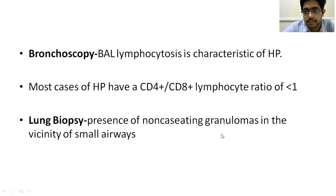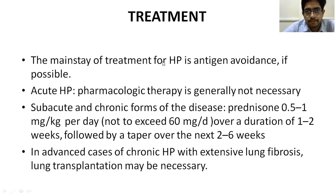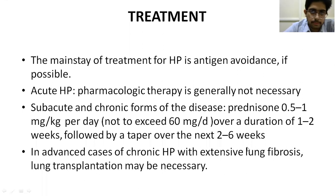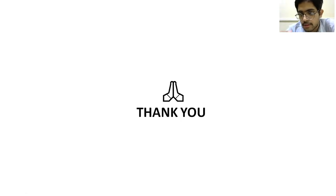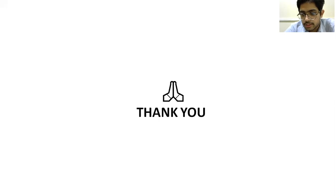Regarding treatment, acute hypersensitivity pneumonitis will resolve on its own without intervention. For subacute and chronic cases, steroids are required. In advanced cases of chronic hypersensitivity pneumonitis, there will be extensive lung fibrosis making the person a respiratory cripple, and the only option left is lung transplantation. This concludes the topic of occupational lung diseases — covering pneumoconiosis and its subtypes: asbestosis, silicosis, coal workers' pneumoconiosis, chronic beryllium disease, hard metal pneumoconiosis — and key points about hypersensitivity pneumonitis.